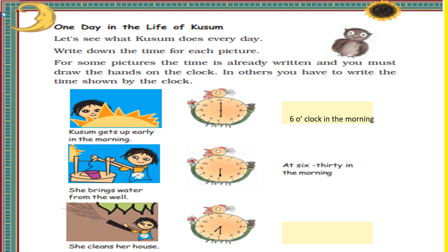In the second picture she brings water from the well, and the time is given as 6:30 in the morning. So the hour hand will point at 6 and the minute hand will point at 6, because when the minute hand reaches 6, that means 6 multiplied by 5 is 30 — so 30 minutes have passed.